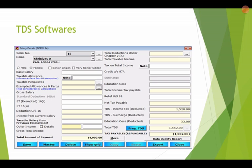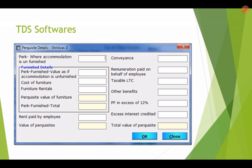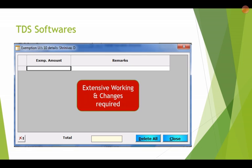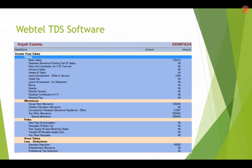We reviewed various software available in the market and found that in some, very little information could be fed in — until now this was sufficient for preparing Form 24Q and Form 16, with basic salary, taxable allowances, value of perquisites, and the rest put under 'others.' However, this will no longer be sufficient for filing the detailed returns or preparing the new Form 16 with the revised salary details. Extensive changes are required in such software.